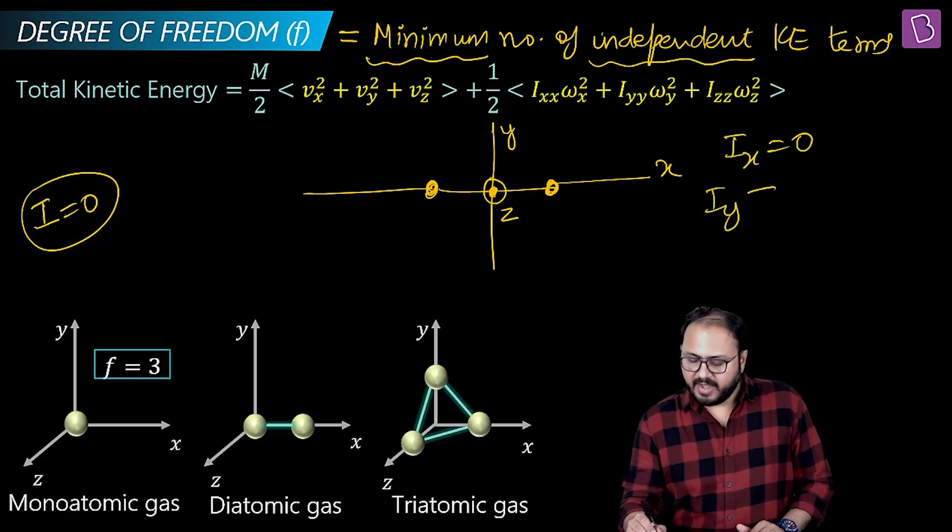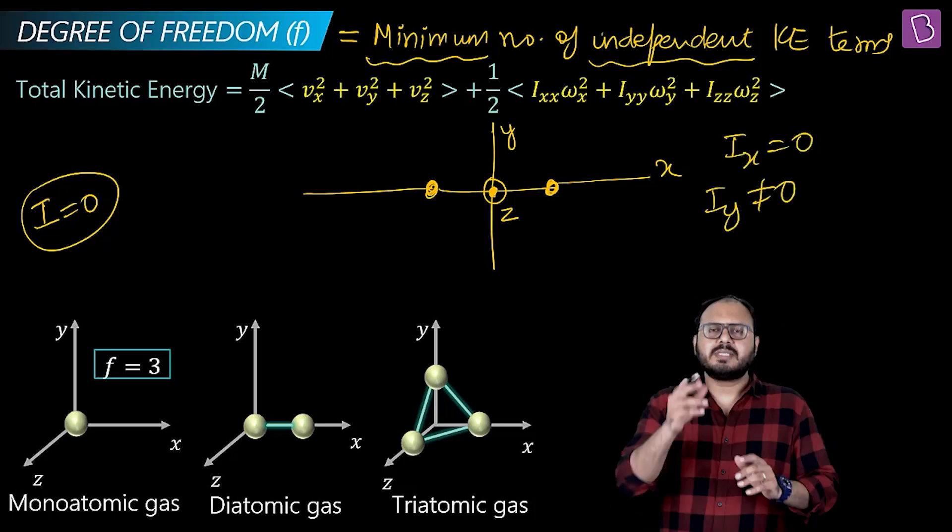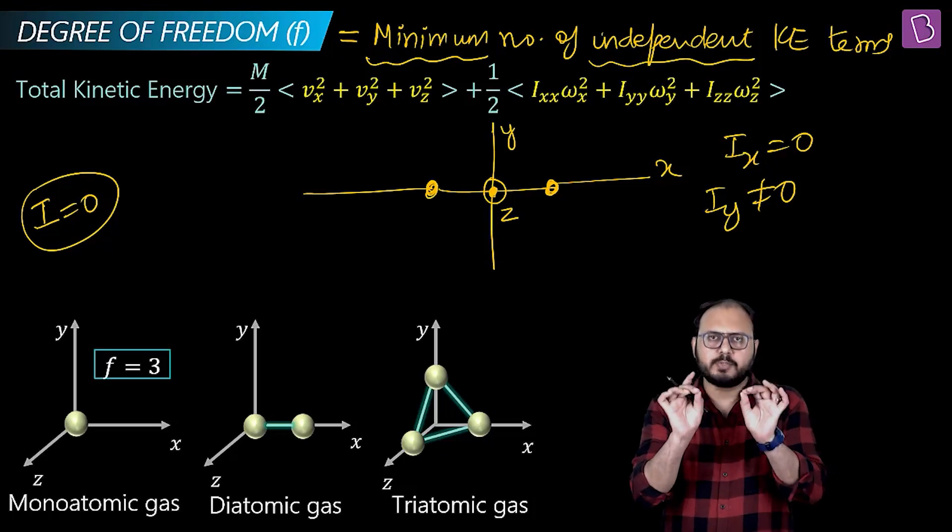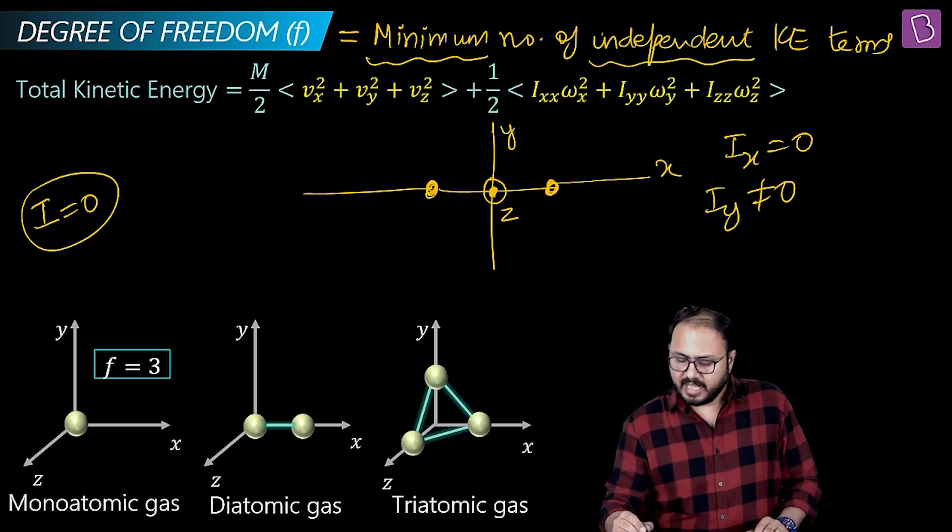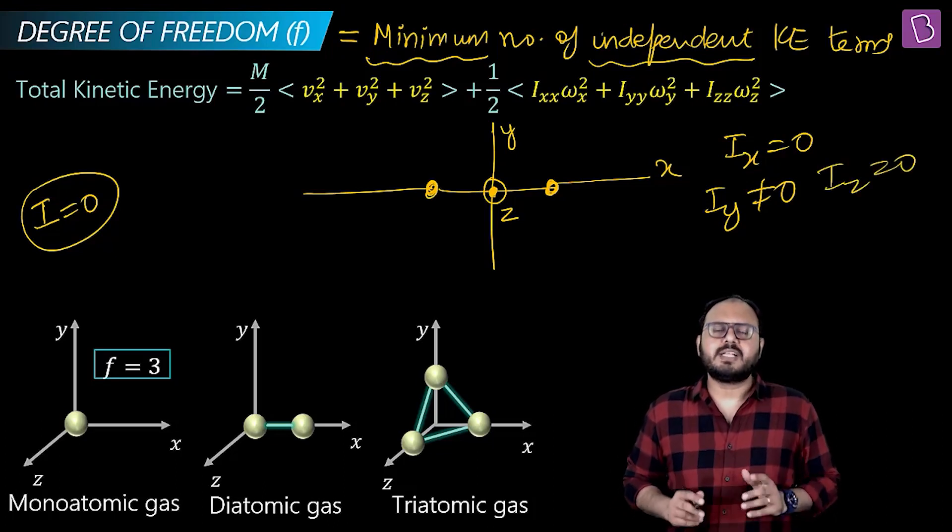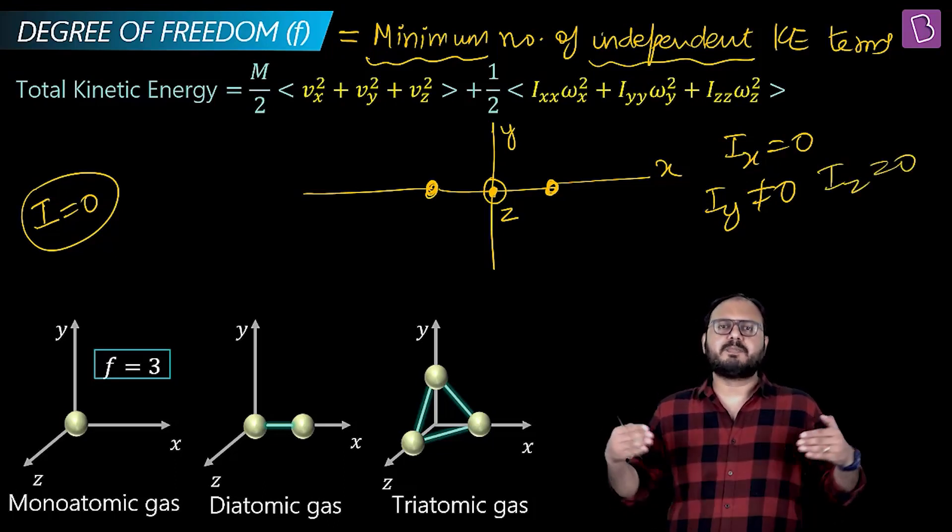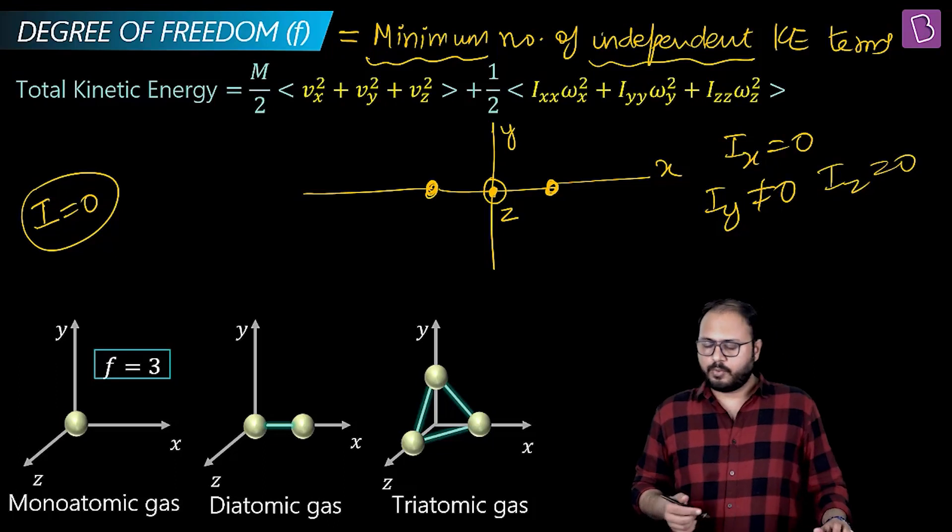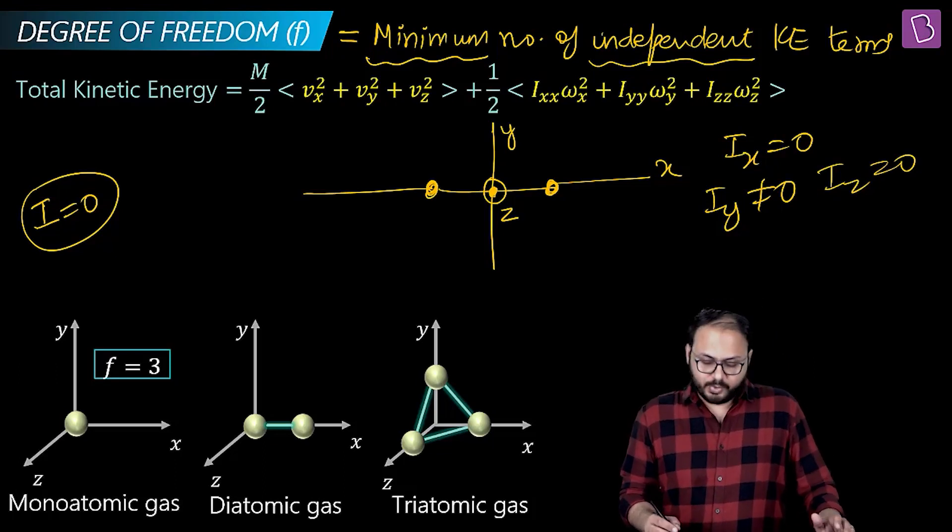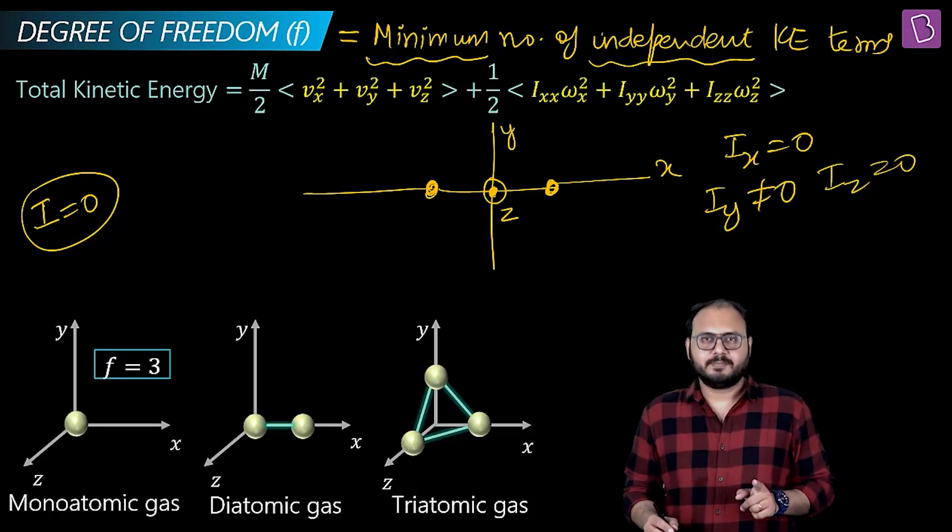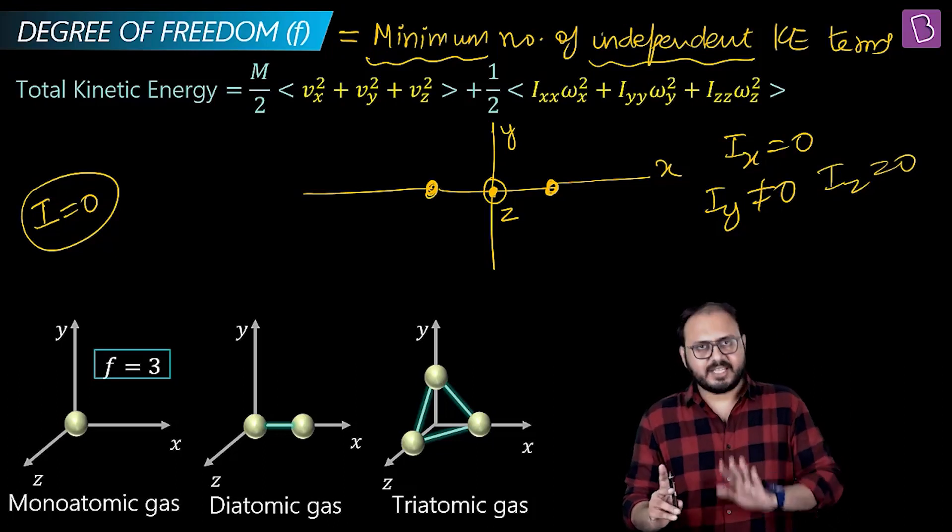For diatomic, watch this. Inertia about this axis can be found out. Inertia about this can be found out. You are saying Iᵧ will not be zero. Why? Because that axis has those molecules or particles away from it. Iᵤ will also not be zero, but what about the dumbbell-shaped diatomic in which the axis is passing through the dumbbell?